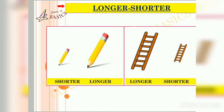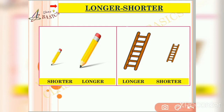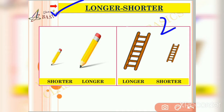In this slide we are going to learn about the concept of longer and shorter. This concept is generally used to compare the measurements between two objects or items — not more than two. In order to compare, we need at least two items, and we try to compare them with respect to each other. Keeping these concepts in mind, let us understand this in detail with the help of this presentation.